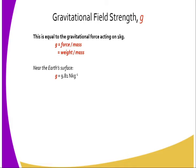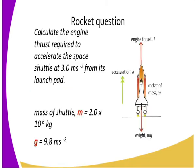this gives us a constant force, which is 9.81 N per every kilogram. In most cases, gravitational field strength is numerically equal to the gravitational acceleration. And this helps us to answer what we refer to as the rocket question.